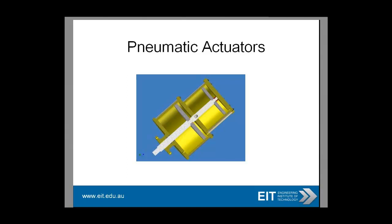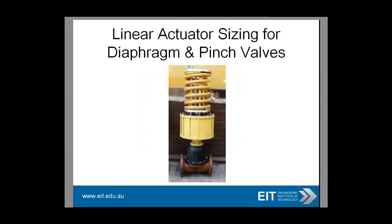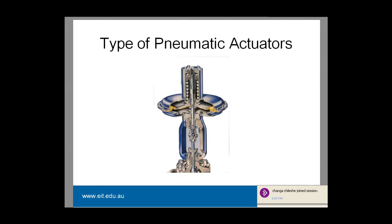Disadvantages would be that pneumatic actuators always require a clean source of air. Sometimes you want a hand wheel override, which can be expensive. Generally, pneumatic actuators — pneumatic meaning they work with air — are going to be large, bulky, and extremely heavy. All of the force needed must overcome the force of that spring — the fail-safe action, that spring return. Remember the potential energy that I spoke about last week, giving you an idea of the potential energy that is going to kick in.